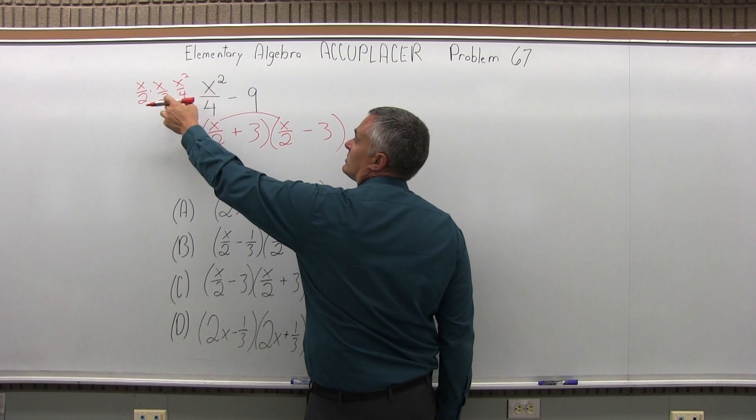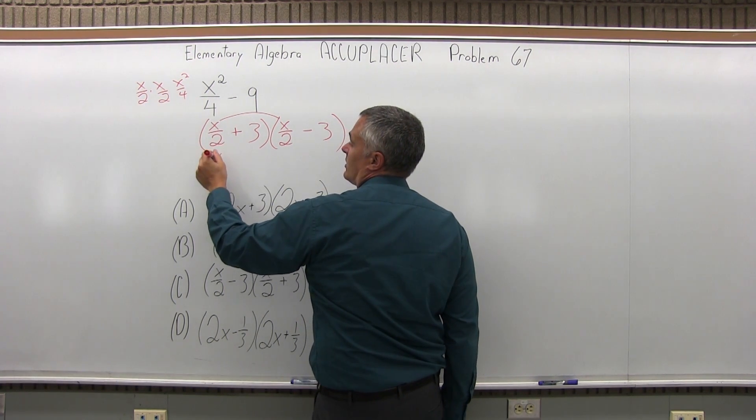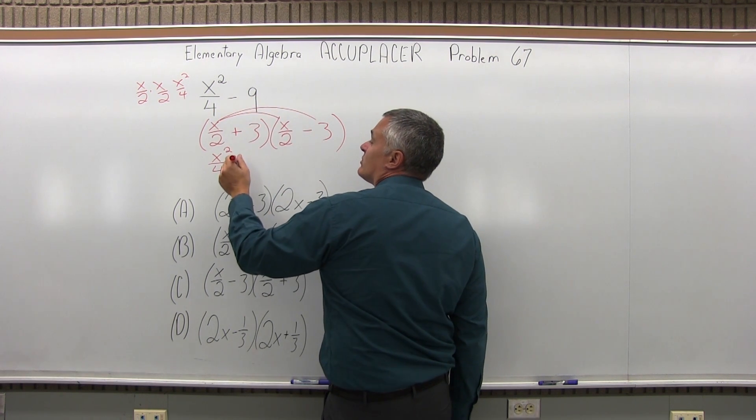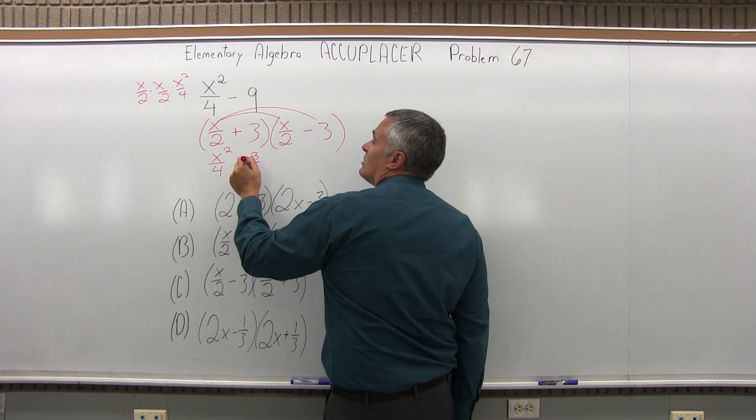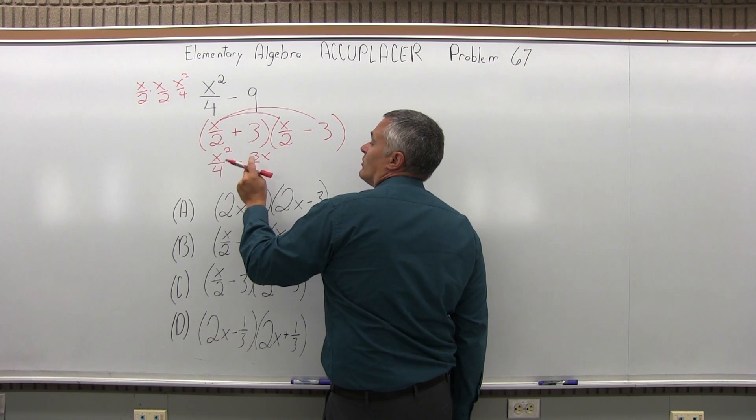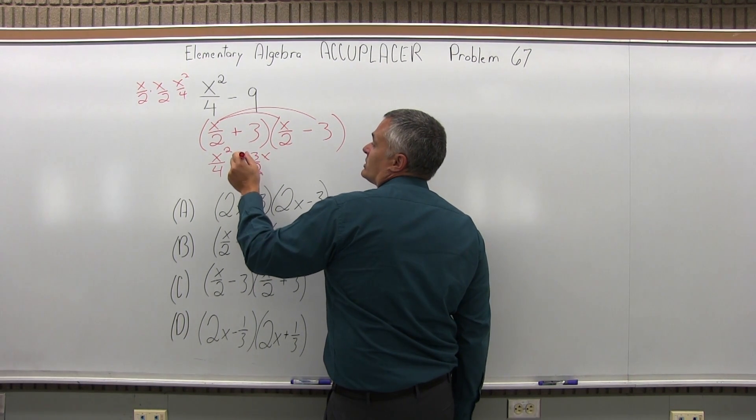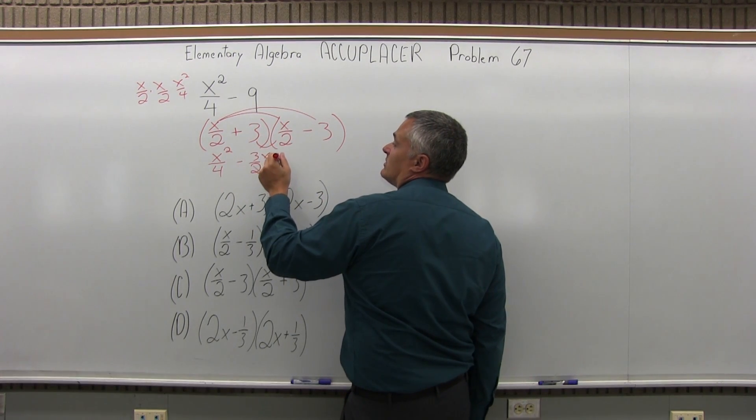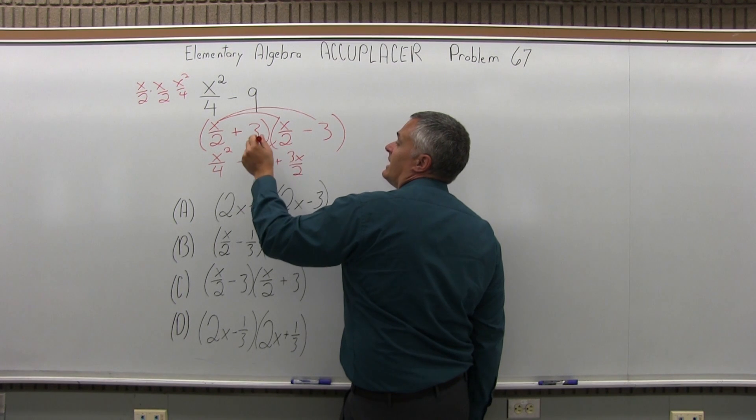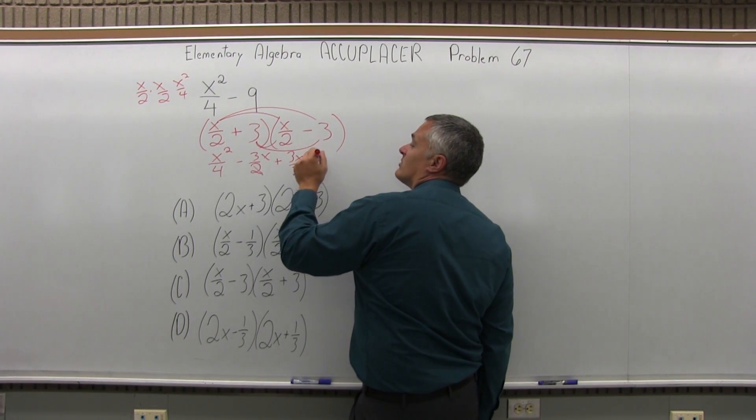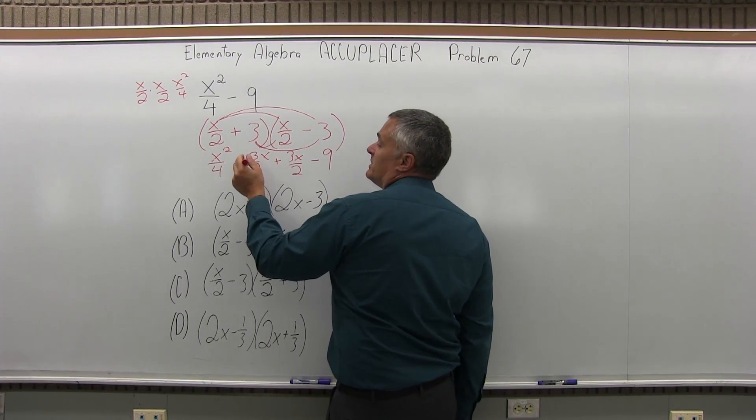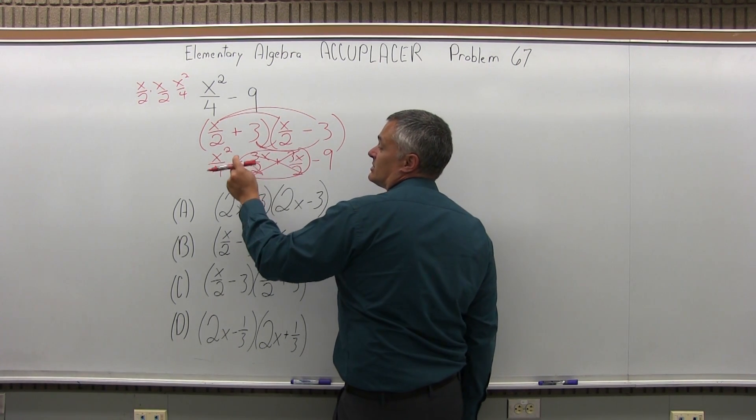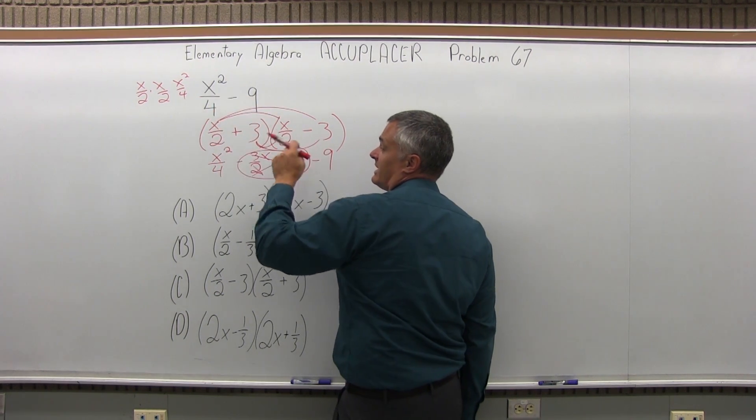So x over 2 times x over 2, as I've written here, is x squared over 4. Then x over 2 times negative 3 is negative 3x over 2, which looks messy, but it's going to cancel. Then I do positive 3 times x over 2 is positive 3x over 2. And then positive 3 times negative 3 is minus 9. And the two pieces in the middle, negative 3x over 2, positive 3x over 2, those just cancel. So it does give me back the x squared over 4 minus 9.